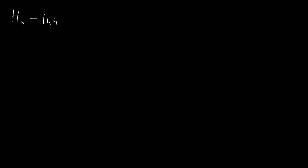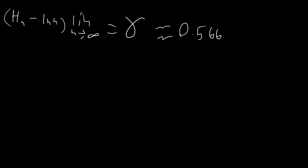The first thing we need to discuss is the Euler-Mascaroni constant. It's defined by h of n minus ln n, all in the limit as n goes to infinity. This equals the Euler-Mascaroni constant, approximately 0.577. Here h of n is the harmonic series sum from k equals 1 to n of 1 over k. As you can see, h of n and ln n grow at essentially the same rate because the difference between them is a finite number, which will be very useful when solving these integrals.